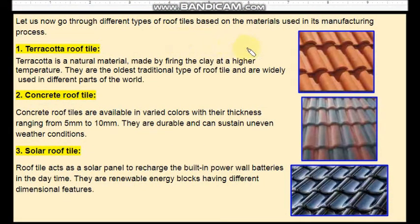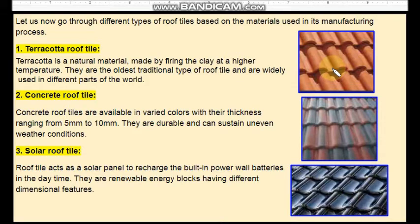Let us go through different types of roof tiles based on the materials used in its manufacturing process. First one is Terracotta roof tile. This is a natural material made by firing the clay at a higher temperature till it attains a red colour. These are the oldest traditional type of roof tiles and are widely used in different parts of the world.